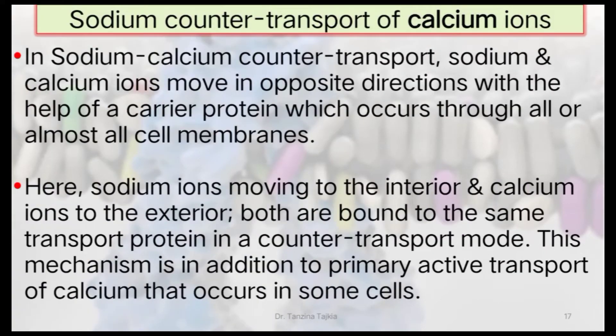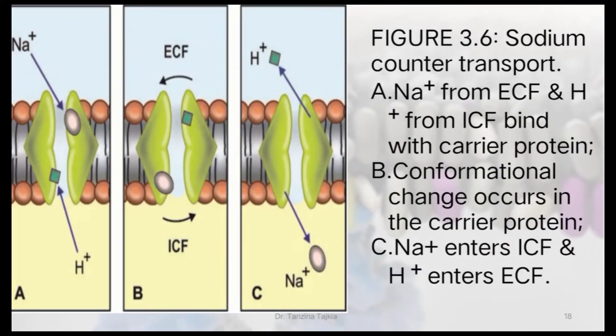In sodium-calcium counter-transport, sodium and calcium ions move in opposite directions with the help of a carrier protein, occurring through all or almost all cell membranes. Sodium ions move to the interior and calcium ions move to the exterior — both bound to the same transport protein in counter-transport mode. This mechanism is in addition to the primary active transport of calcium that occurs in some cells.